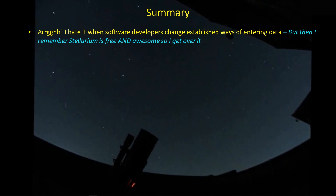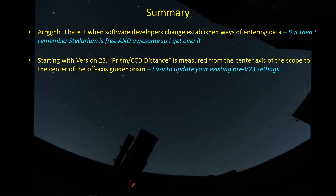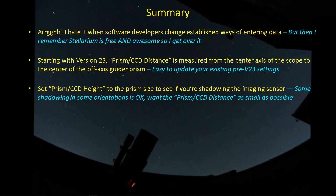I always hate it when software developers change the way we've been doing things just for the heck of it. I do agree that the way they're entering the numbers now for the prism CCD distance is a better way to do it — it means you don't have to consider the actual dimensions of the guide camera in the calculation — but having to change settings that have been working just to keep up with the new version is a bit irritating. Then again, Stellarium is free and a pretty awesome piece of software, so I get over that quickly. Starting with version 23, the prism CCD distance is measured from the central axis of the scope up to the center of the off-axis guider prism. Updating your existing pre-version 23 settings is easy. If you want to verify you're not getting shadowing on your imaging sensor, type in the dimensions of your actual prism into the prism CCD height and width, and that will let you see the inner circle showing where that prism can be in all orientations, so you can judge whether you need to raise the prism.